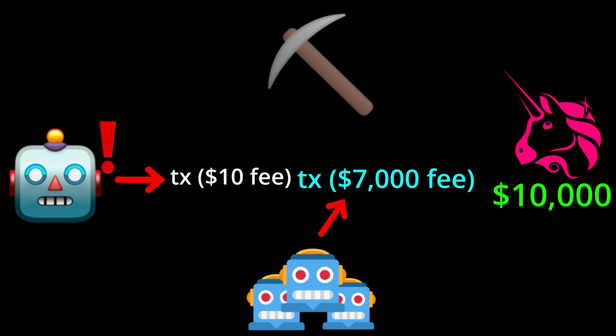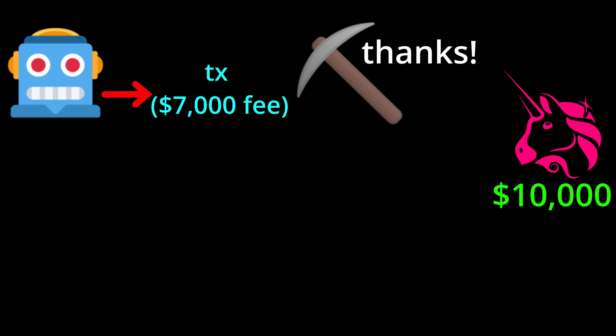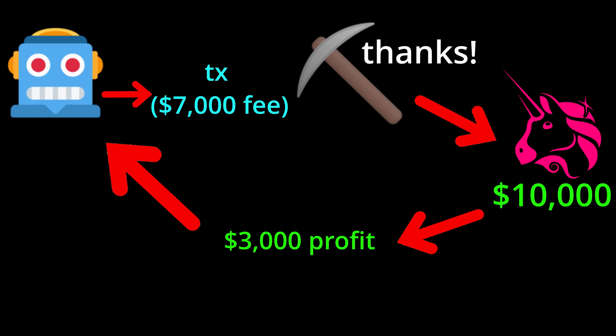That $10,000 potential profit is MEV. If a miner doesn't capture it, a PGA is kicked off and the difference between the price at which the auction settles and the total MEV available is the winning trader's profit. So if a $7,000 fee is paid to the miner, then the remaining $3,000 is left to the trader. Users on Ethereum are hurt the most because miners are incentivized to reorder transactions, and bidding wars increase fees by a large amount, making the main chain too expensive for regular users.